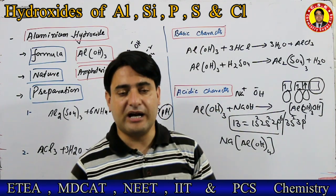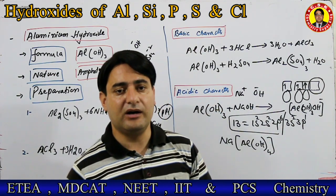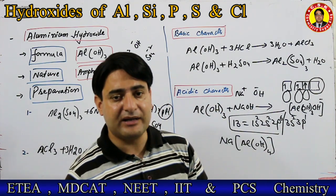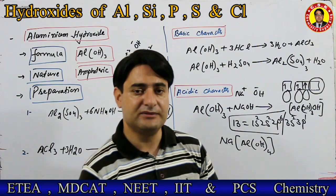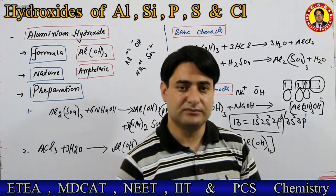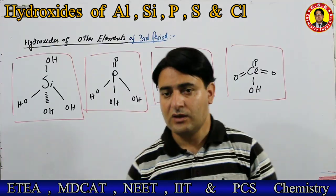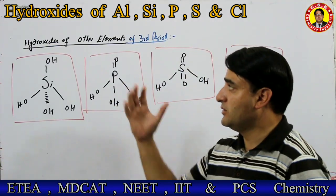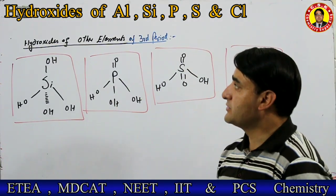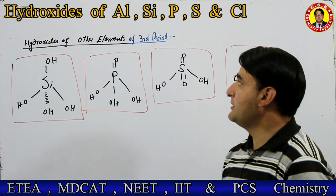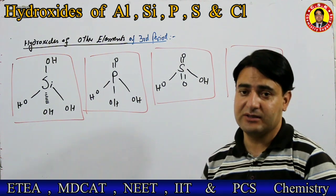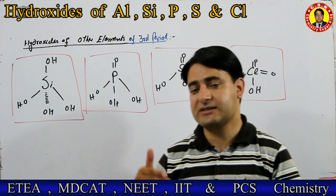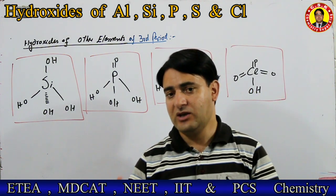یہ ہمارے پاس تھا aluminium hydroxide۔ اب میں بات کروں گا hydroxides of other elements of the third period — یعنی ابھی تک ہم نے discuss کیے سوڈیم hydroxide، magnesium hydroxide اور آج کی video ہم نے start کی تھی aluminium hydroxide کے ساتھ۔